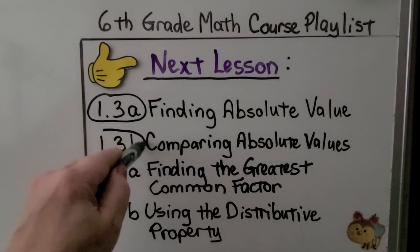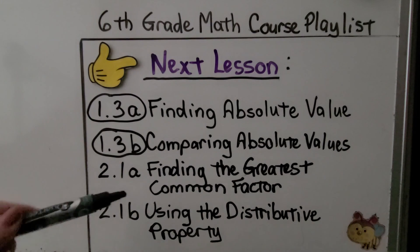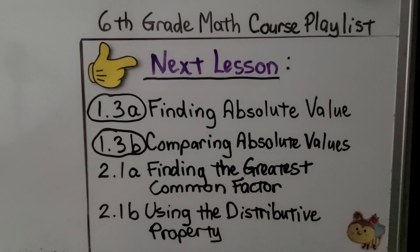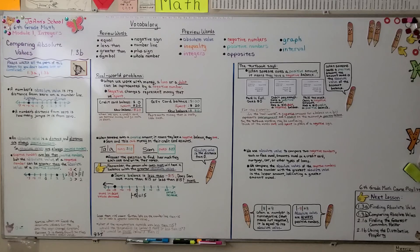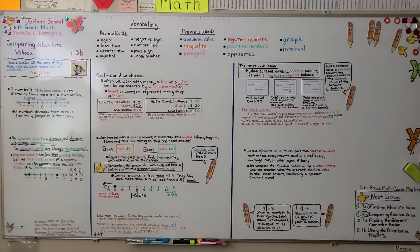We've completed this lesson. Our next lesson is 2.1a, where we'll talk about finding the greatest common factor — and 2.1 is split into two parts, so make sure you watch both. I hope you understood. If you're still confused, go back to the electric bills example and that'll help you. Have a wonderful day and I'll see you next time.